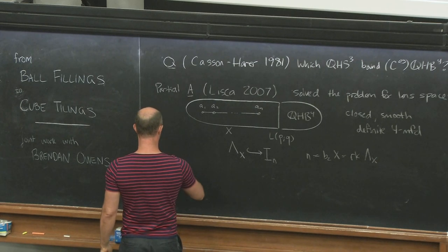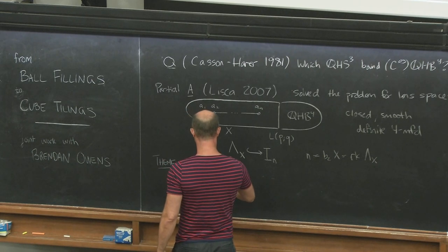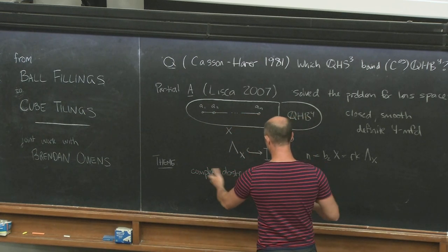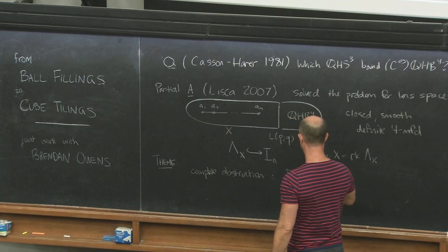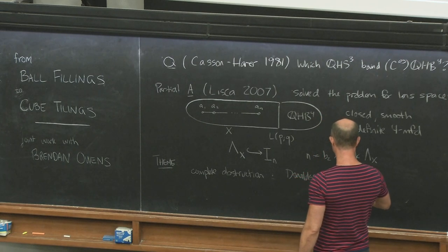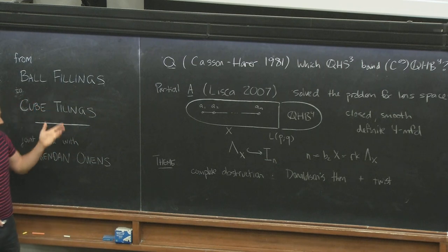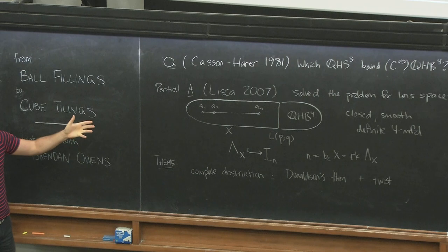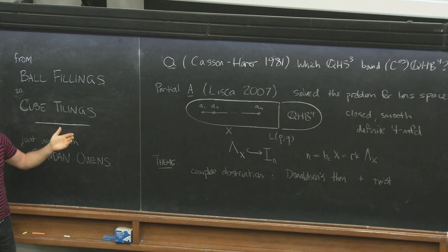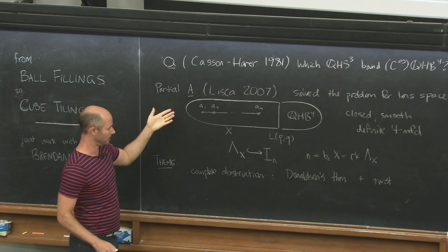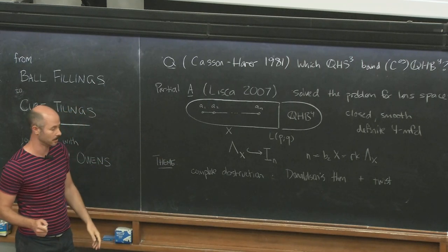So that places a constraint on what p q can be. This lattice has to embed into the diagonal lattice, and if it doesn't, then you know your lens space doesn't bound a rational ball. That's practically a complete obstruction. The twist is that you have this trick of being able to reverse orientation on the lens space, and it will bound a different plumbing. Possessing those two embeddings is a complete obstruction to the lens space bounding a rational ball. If it passes that test, then there is a construction to show that lens space bounds a smooth rational homology ball.